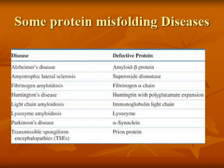Some examples of protein misfolding: defects in amyloid-P protein lead to Alzheimer's disease; defects in superoxide dismutase lead to amyotrophic lateral sclerosis; fibrinogen alpha chain leads to fibrinogen amyloidosis; huntingtin protein with polyglutamine expansion leads to Huntington's disease; defects in immunoglobulin light chain lead to light chain amyloidosis; lysosome protein leads to lysosomal amyloidosis; alpha-synuclein leads to Parkinson's disease; prion disease leads to transmissible spongiform encephalopathy.